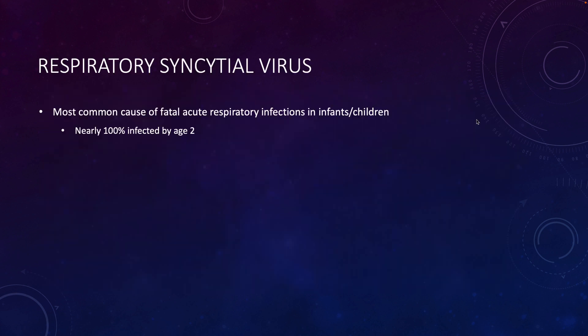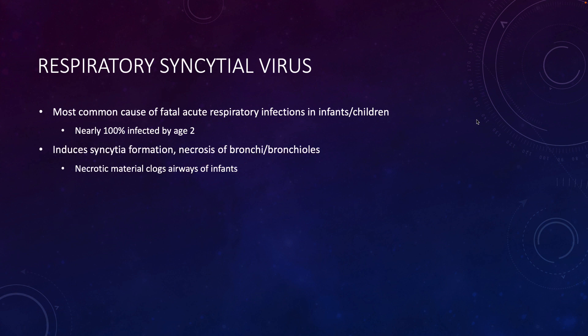Our final paramyxovirus is respiratory syncytial virus — RSV. This is the most common cause of fatal acute respiratory infections in infants and children. Nearly 100% of children will be infected by the age of two — it's very, very common. RSV can induce syncytia formation, and you can also have necrosis of tissue in the lower respiratory tract, where that necrotic material will clog the airways causing respiratory failure.